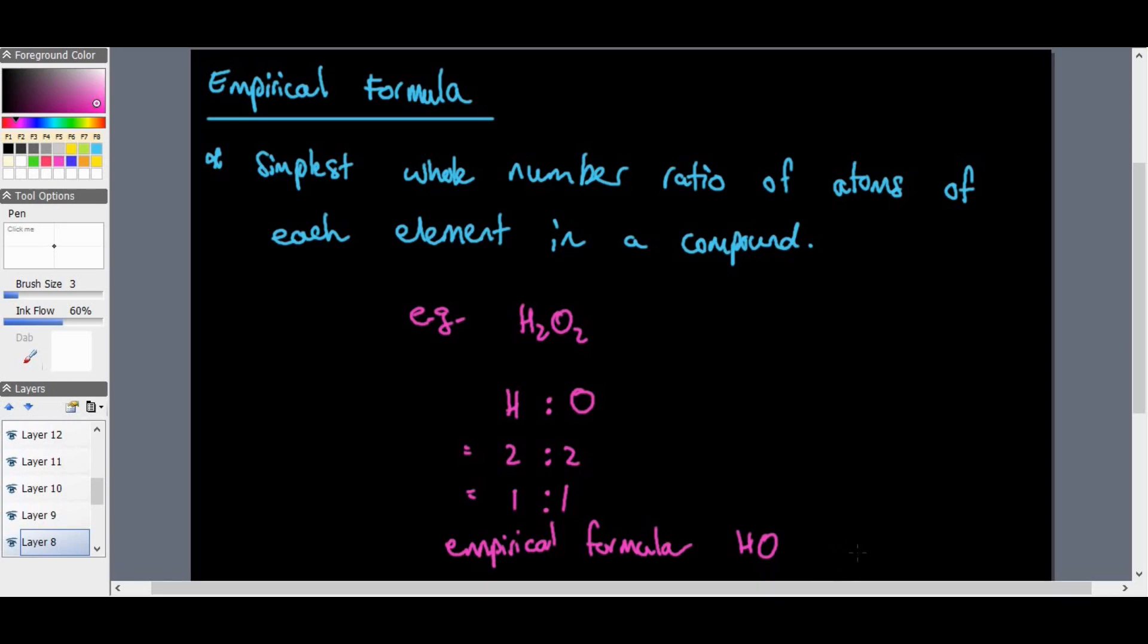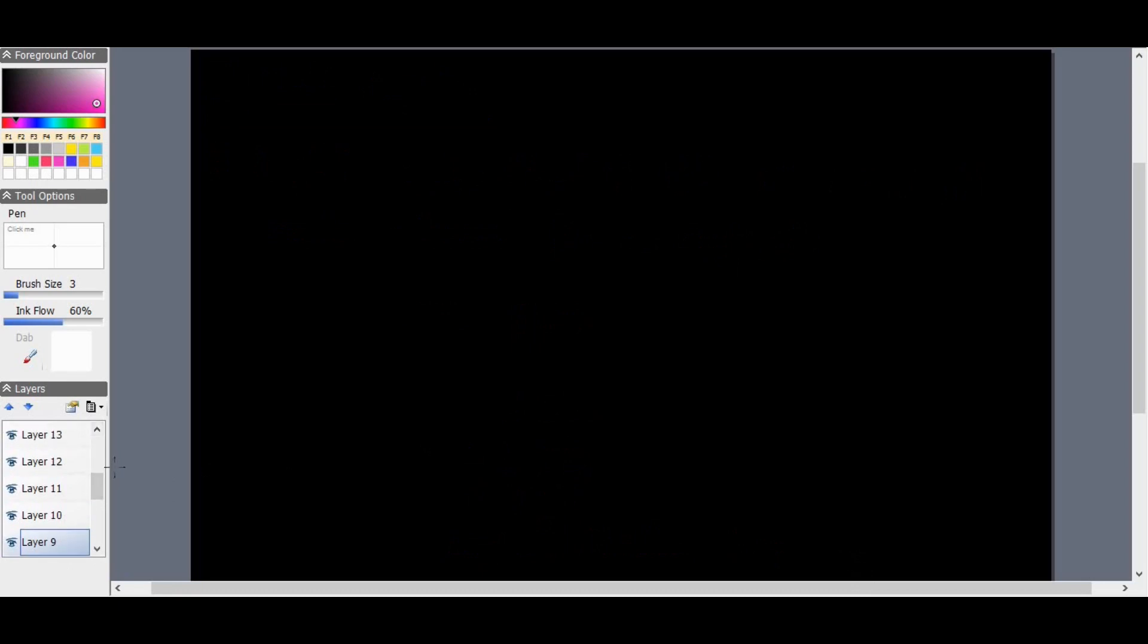And then the empirical formula of hydrogen peroxide is HO. Looks like just hydrogen oxide. So that is just looking at the molecular formula and then finding the empirical formula from there. Now, how do we get from the empirical formula back to the molecular formula?